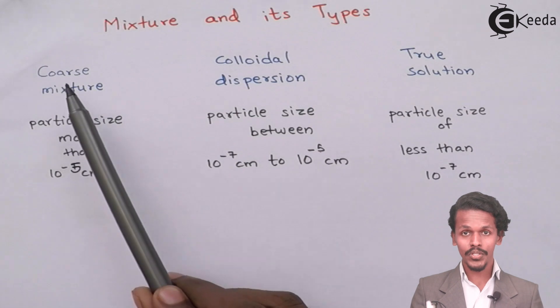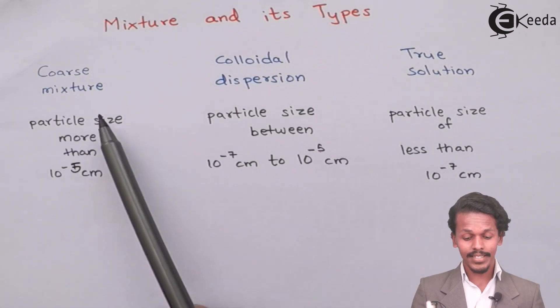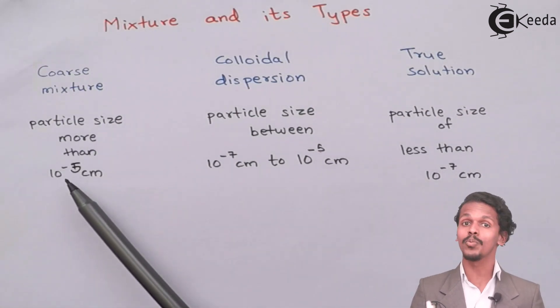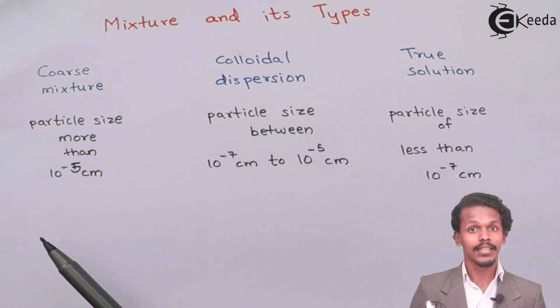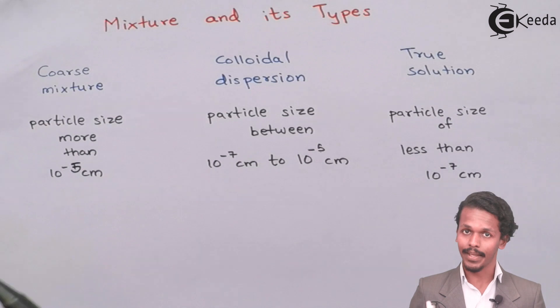So first of all, when it comes to Coarse Mixture, the particle size are more than 10 raised to minus 5 cm, and these particles can be visibly seen to us with our naked eye.